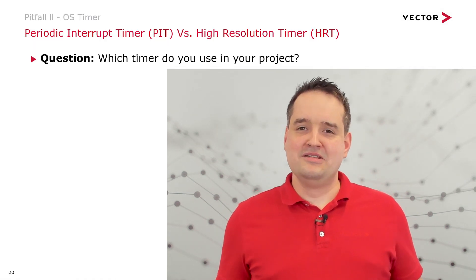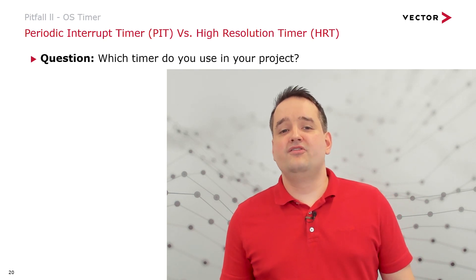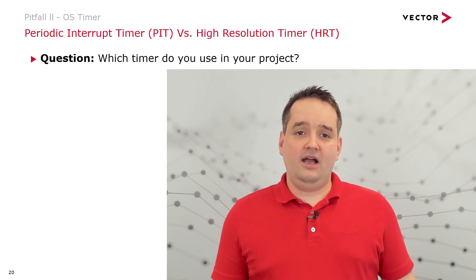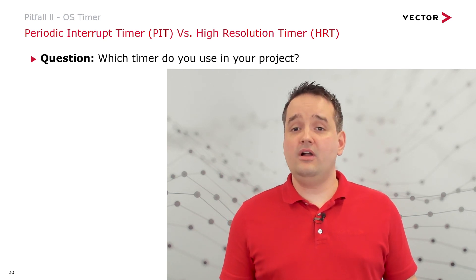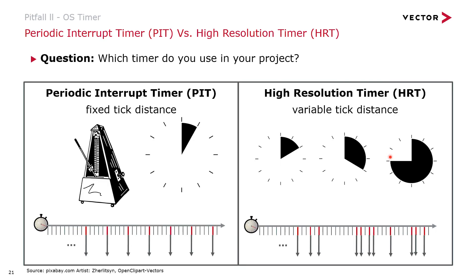Question to the audience — you can pause the video and check your configuration: which timer do you use? Are you using a periodic interrupt timer or a high resolution timer? As a periodic interrupt timer, we understand a timer with a fixed tick distance — like a metronome. Each timer interrupt service routine comes after the same tick distance, and the increment is configurable in DaVinci Configurator 5. As a high resolution timer, the tick distance can vary, with different increments possible.